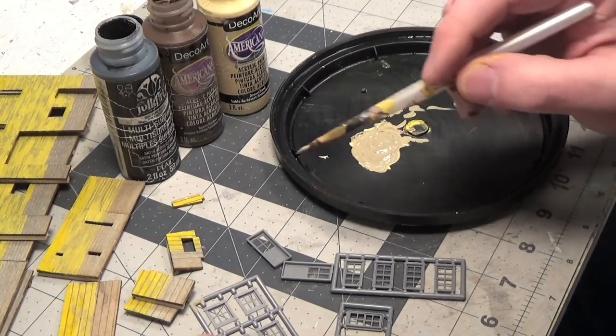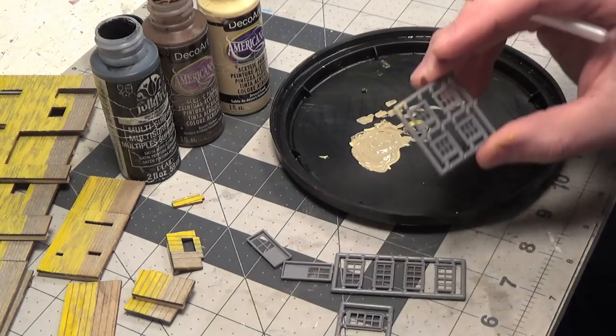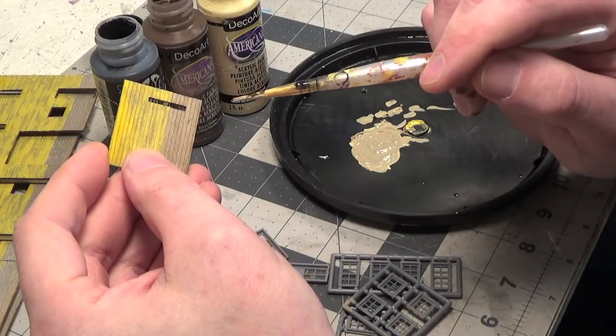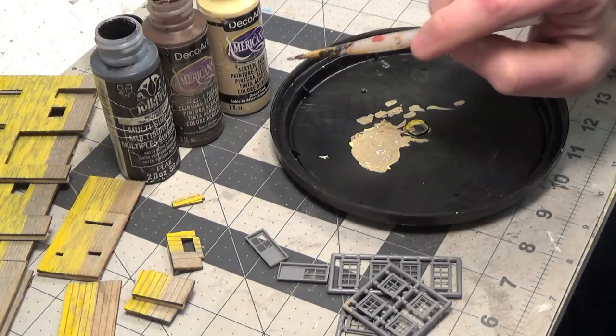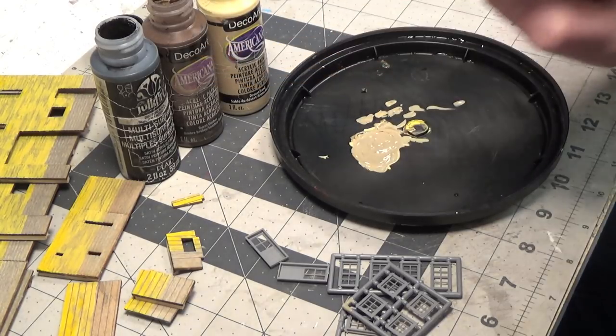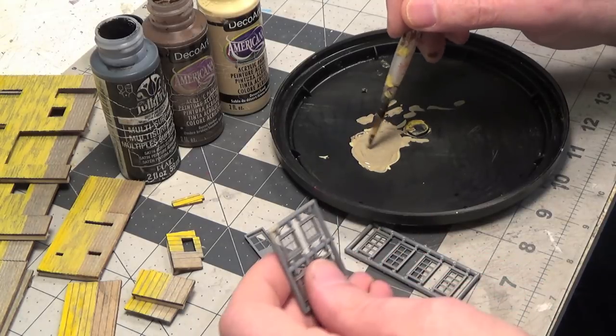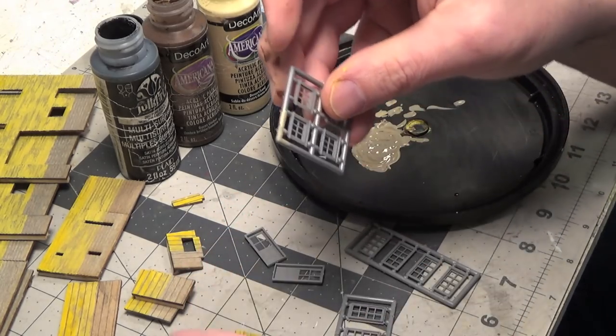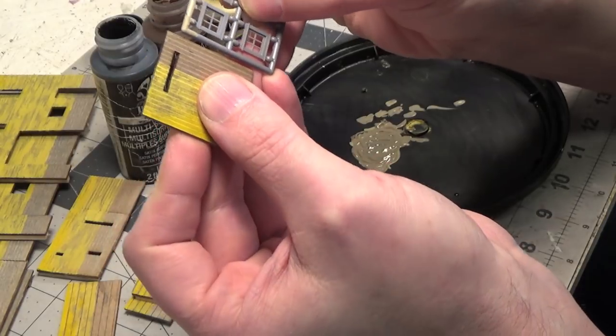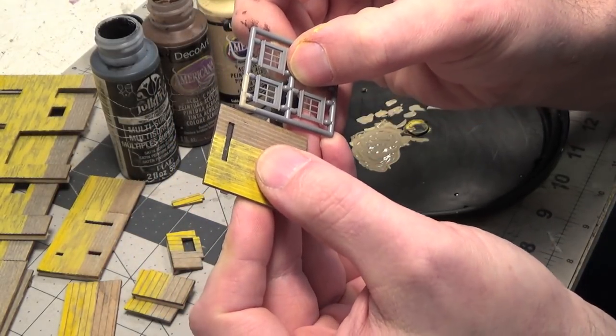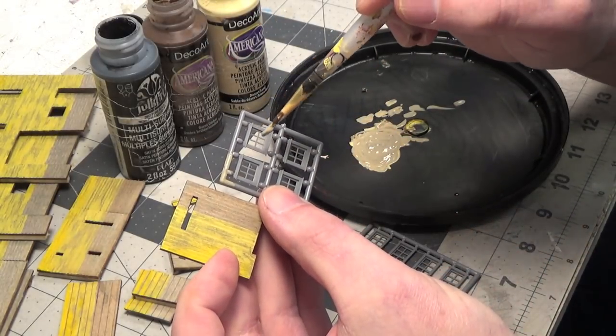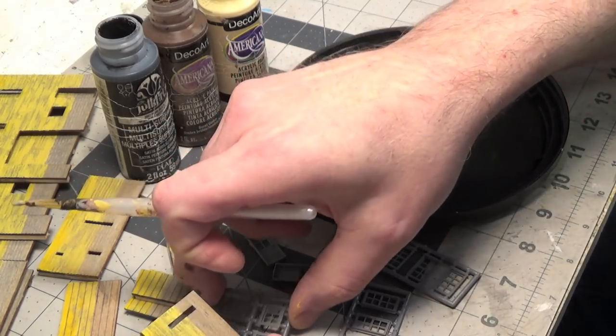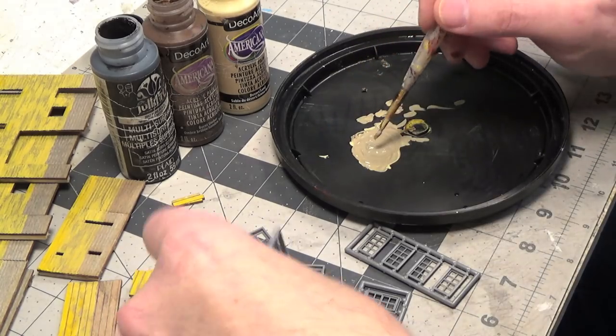So next, we need to paint the windows and the doors to match the bare wood color that we've stained. So I'm just mixing desert sand, burnt umber, and a little bit of black. And you can see I've tested some up in the corner. And so you just want to try to get close and match. Because then what we'll do is we'll dry brush the red paint color over this after it dries. We just want it to look like bare wood instead of gray plastic.